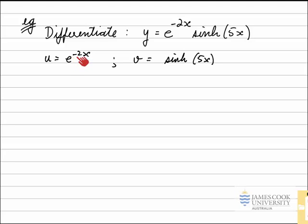For the derivatives of each of these functions, I'm going to use the chain rule. We know the derivative of e to the x, and we know the derivative of sinh x, but we've got e to the negative 2x, so we've got a function of a function. As with the hyperbolic function, we've got sinh of 5x, so that's a function inside a function. So we need the chain rule for each of these.